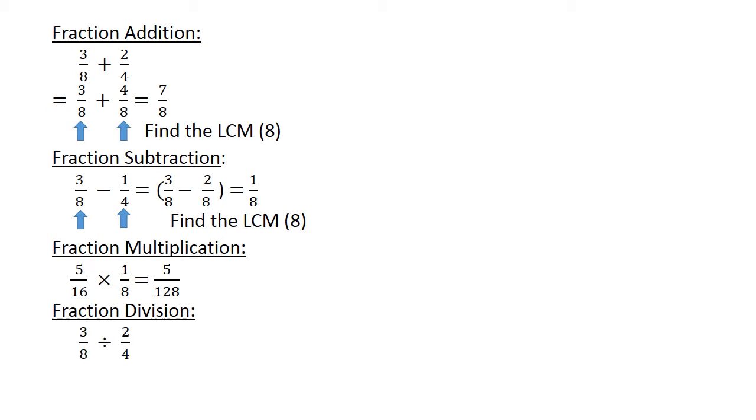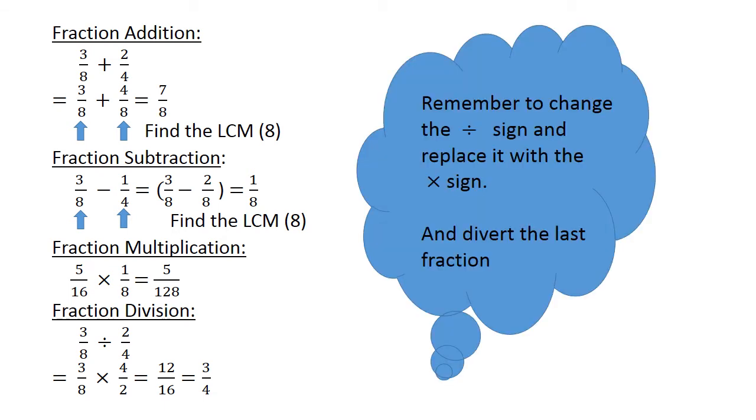3 over 8 divided by 2 over 4 equals. 3 over 8. The division sign changes to a multiplication sign, and you invert the last fraction. 4 over 2, which is equal to 12 over 16, which is equal to 3 over 4. Remember to change the division sign and replace it with the multiplication sign, and invert the last fraction.